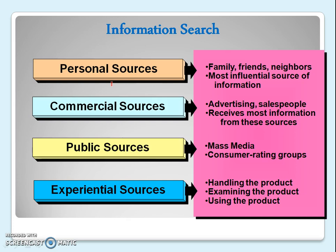The second step is information search. After recognizing the problem or feeling the deficiency or need of a product, we go to the market or try to find information about that particular product we want to buy. There are various brands available and we collect information through four sources: personal source, commercial source, public source, and experiential source.